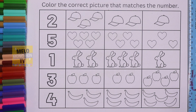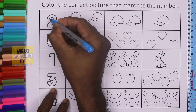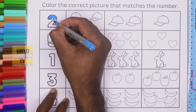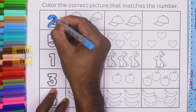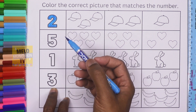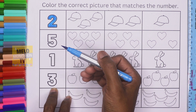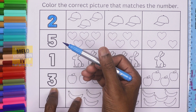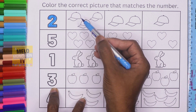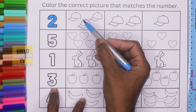So let's check. The first one is number two. Let's color two first — this one, number two. Let's color it with blue color.